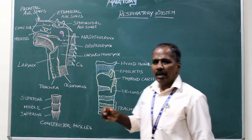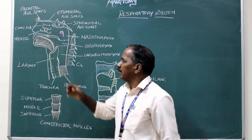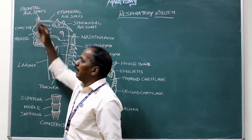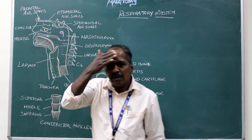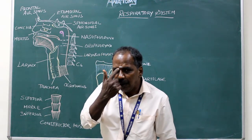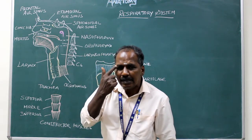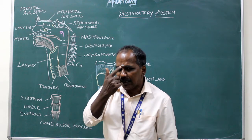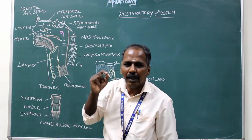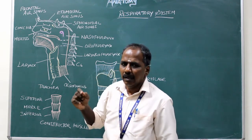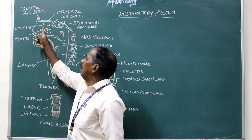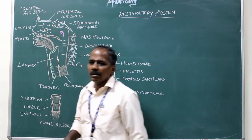Frontal air sinus: It is present in the frontal bone, near the medial end of the superciliary arch. It drains into the middle meatus.